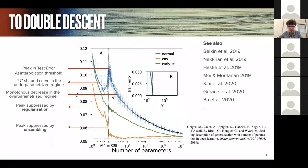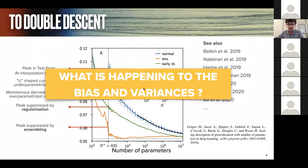Notice that this peak can be suppressed by performing regularization. For instance, in this paper it was performed by early stopping, or even by ensembling, which is averaging the predictions of differently initialized networks. What we'd like to do is understand what, in this situation, is happening to the bias and variance as we knew them before.